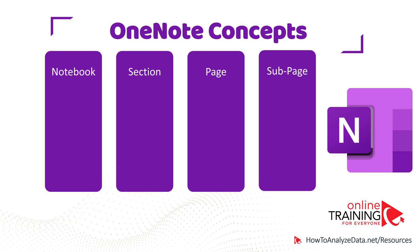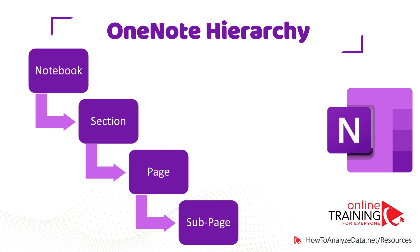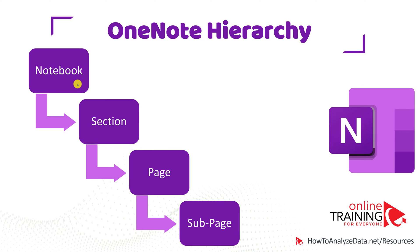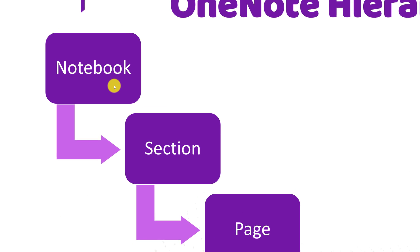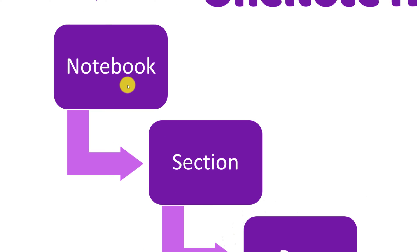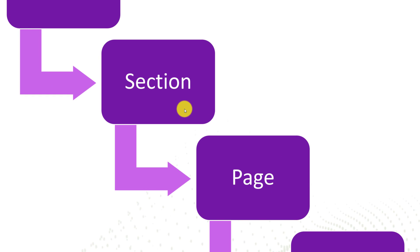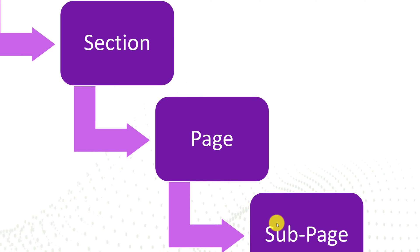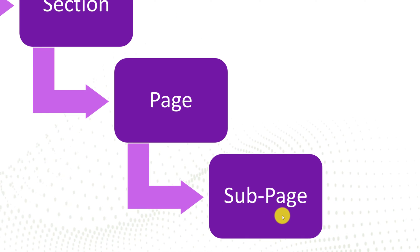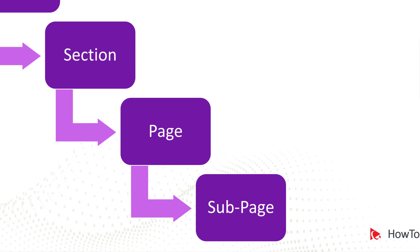We have four major concepts: notebook, section, page, and subpage. They are organized in a hierarchical structure. There might be multiple sections inside one notebook, multiple pages inside one section, and multiple subpages inside a page.